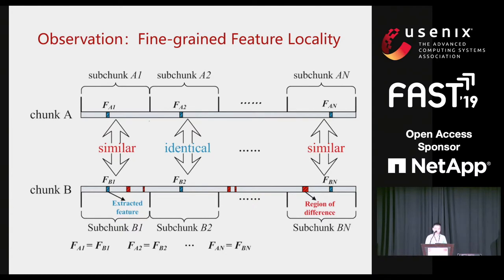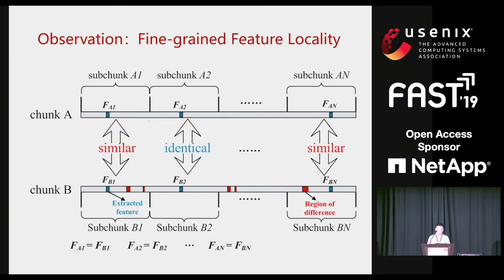Now we introduce our observation of fine-grained feature locality that motivated this paper. As we know, duplicated chunks appear in the same or similar order among multiple backup streams with very high probability, which is known as backup stream locality. We believe that fine-grained locality also exists among similar chunks. According to this assumption, as shown in this figure, if two chunks are similar to each other, most of their corresponding sub-chunks will be similar or identical. And hence, their features will be largely identical. This is what we call fine-grained feature locality.